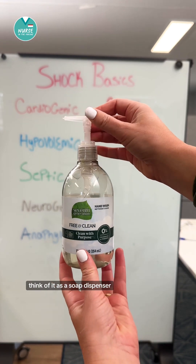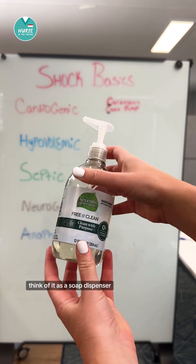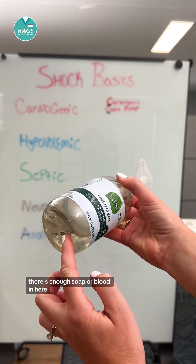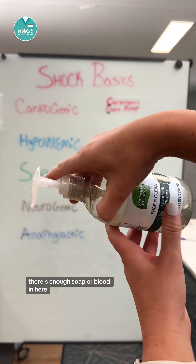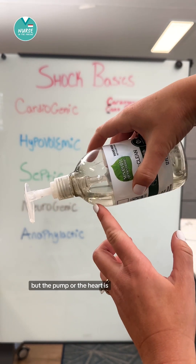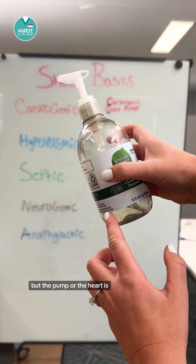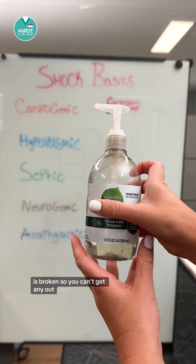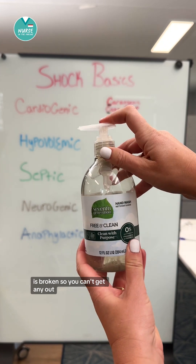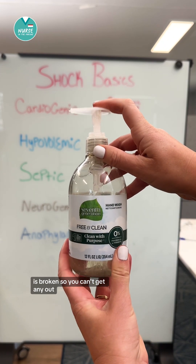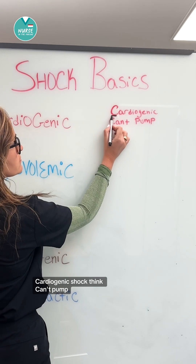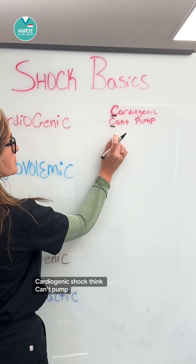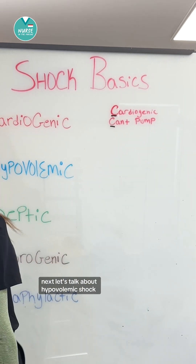Think of it as a soap dispenser. There's enough soap, or blood, in here, but the pump, or the heart, is broken, so you can't get any out. This is like cardiogenic shock — think can't pump.